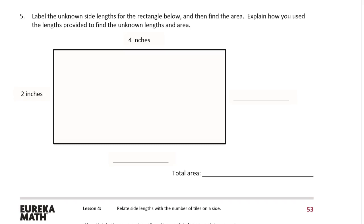So, if this side is two inches, this is the opposite sides of a rectangle. So if the left side is two inches, then the right side must also be two inches. And if the top is four inches, the bottom has to be four inches.